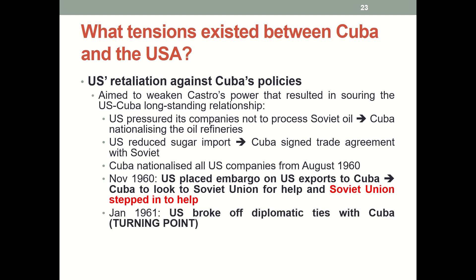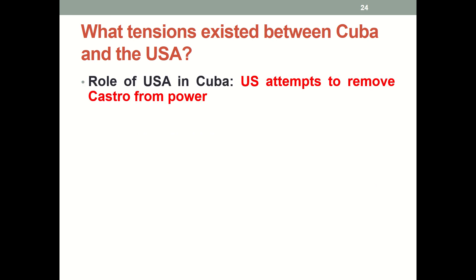This escalated all the way to January 1961, when the US broke off diplomatic ties with Cuba — a major turning point. At this point, the US started to attempt to remove Castro from power.